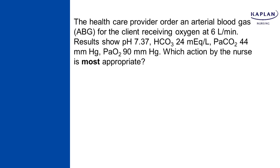Let's look at this question. The health care provider ordered an arterial blood gas (ABG) for a client receiving oxygen at 6 liters per minute. Results show pH 7.37, HCO3 24 milliequivalents per liter, PaCO2 44 millimeters mercury, and PaO2 90 millimeters mercury. Which action by the nurse is most appropriate? Those words 'most appropriate' tell you that your discrimination is required to answer this question.